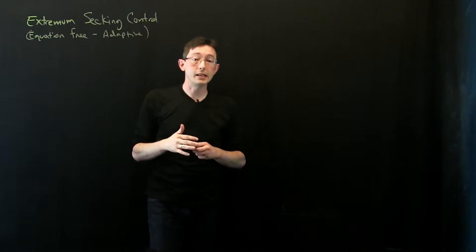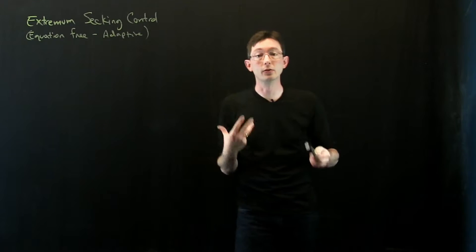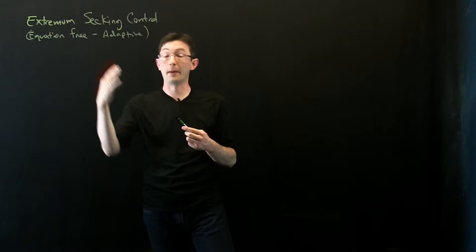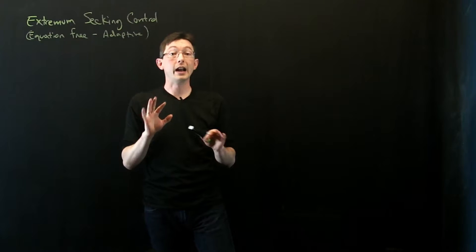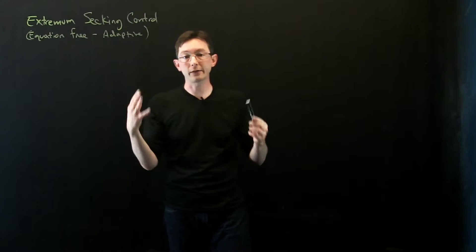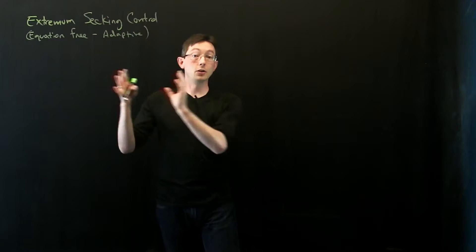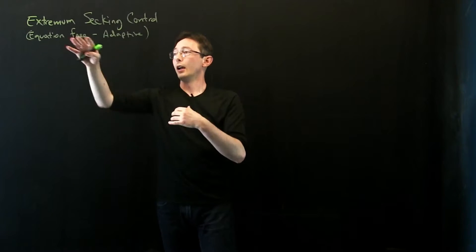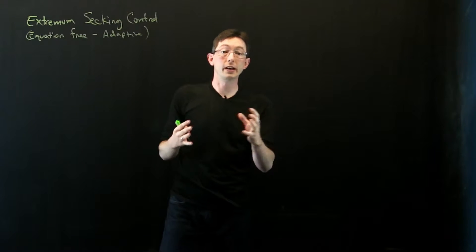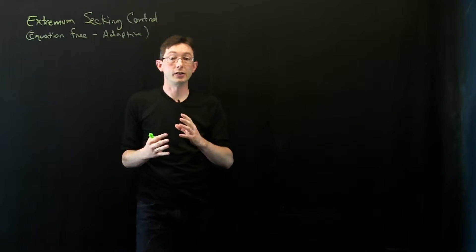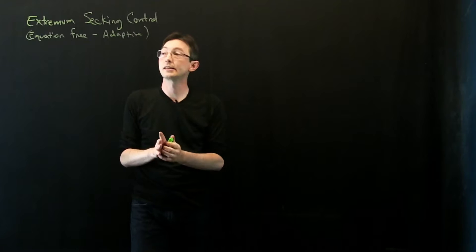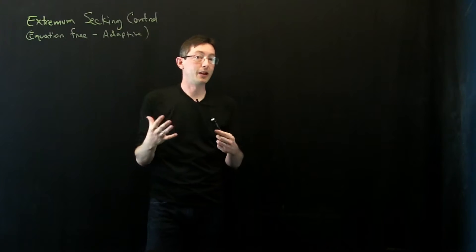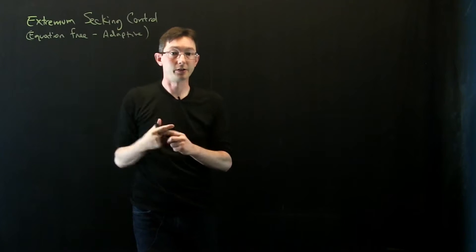Extremum seeking control is an extremely useful, powerful, and effective method of optimization for control that I use quite frequently. So if there's ever a problem where I don't want to model the system and I have a control knob and there's some kind of overarching objective function or cost function that I want to maximize or minimize, I usually will try extremum seeking control at least in my first round of approaches.